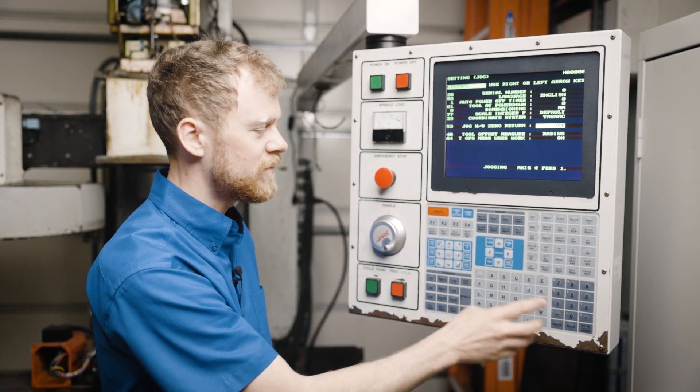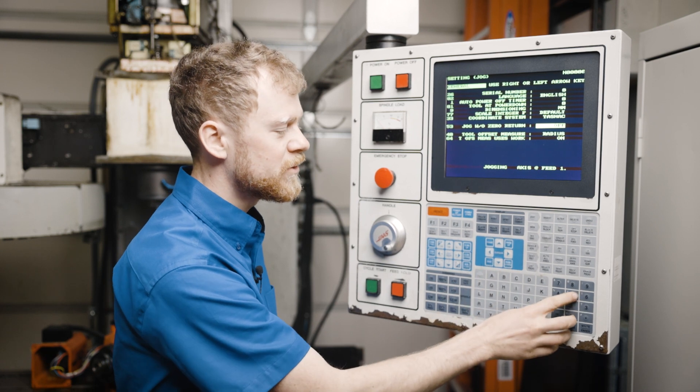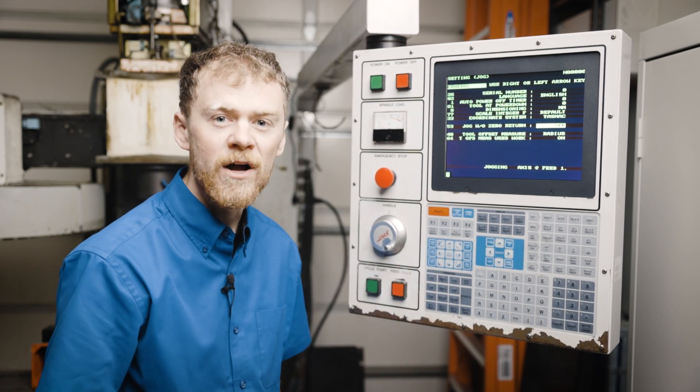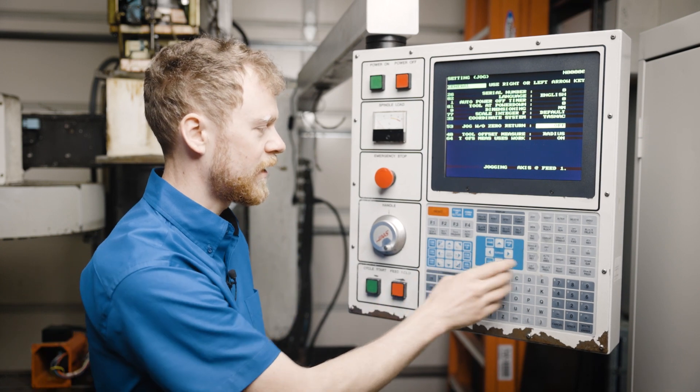That's when you use setting 53. Go to the settings page, type in 53, and hit the down arrow. This will allow you to jog the machine without zero returning it.